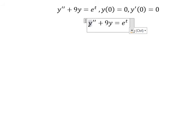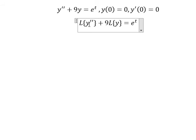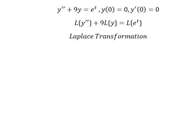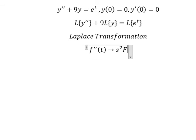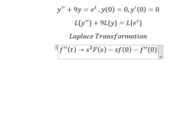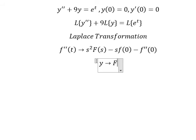We put Laplace for both sides. We have the formula in here. So about the second derivative, we need to transform this one into S squared capital F of S minus S. And we have F of number 0 minus the second derivative at t equal to number 0. About this one, we need to transform into capital F of S.